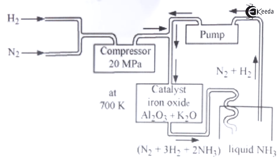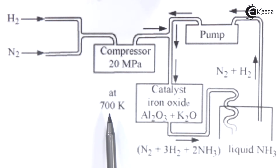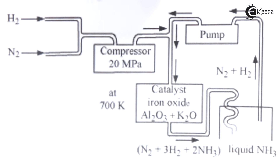The temperature maintained here is 700 Kelvin, which is the optimum temperature. The reason is that the formation of ammonia is a reversible process, and also it is an exothermic process. That is why we have to maintain a balance — not too low and not too high a temperature. This is how we can obtain ammonia in Haber's process.